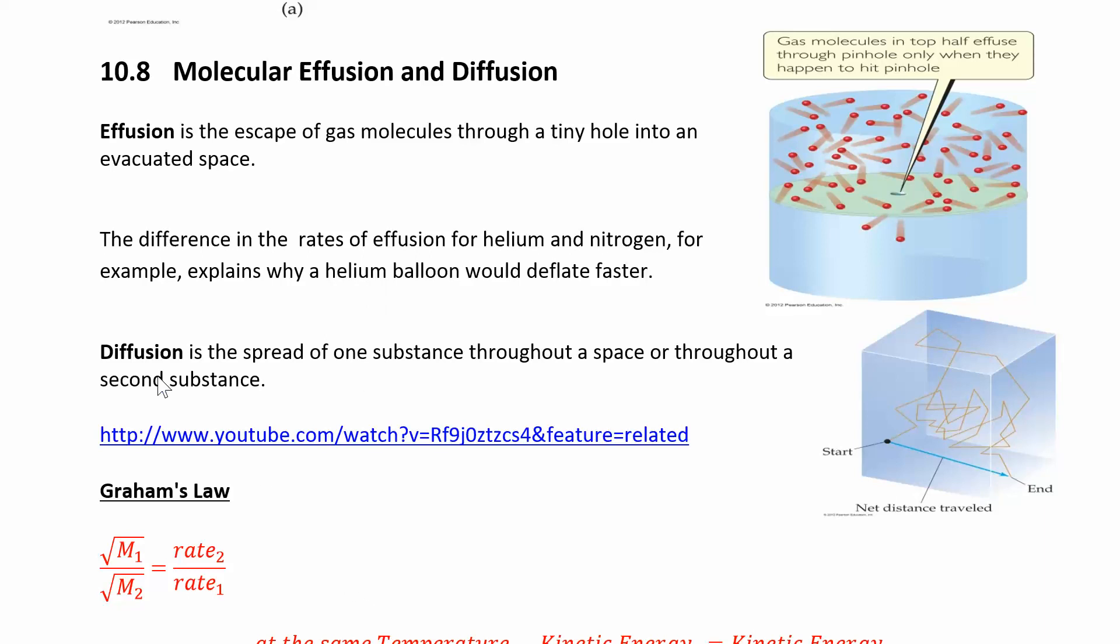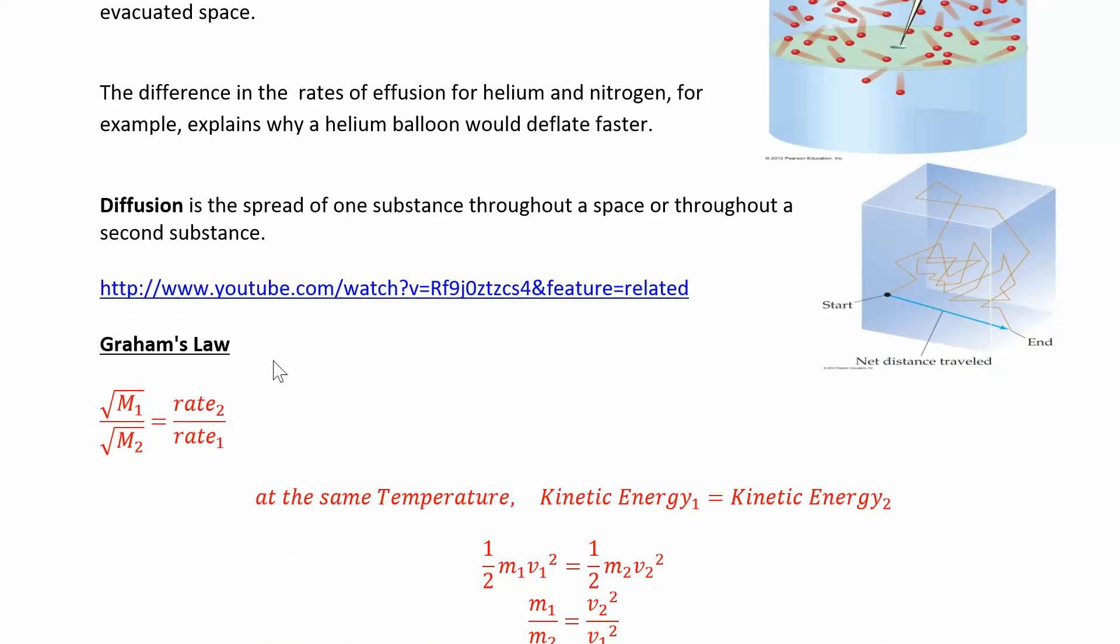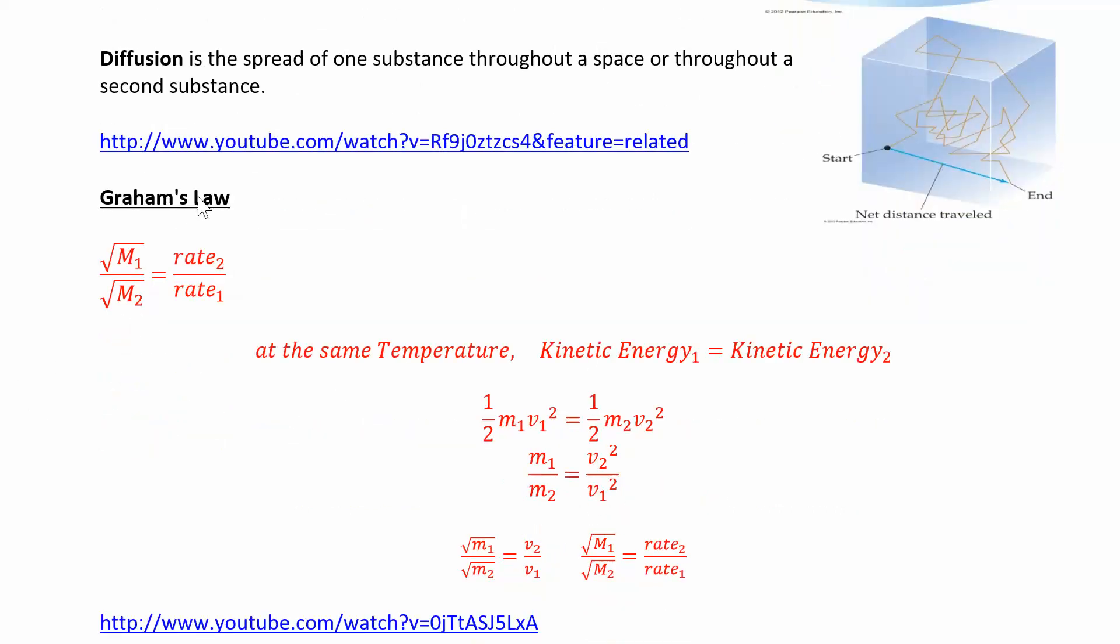Diffusion is a little bit different. Principles are generally the same. But diffusion is when you're spreading one substance throughout a space or throughout a second substance. So you can imagine if you sprayed some perfume in the corner of a room, those gas molecules from that perfume are eventually going to diffuse their way throughout the room, and you'll be able to smell it on the other side. That's an example of diffusion. And Graham's Law is what we're going to use to calculate diffusion or the rates of diffusion.